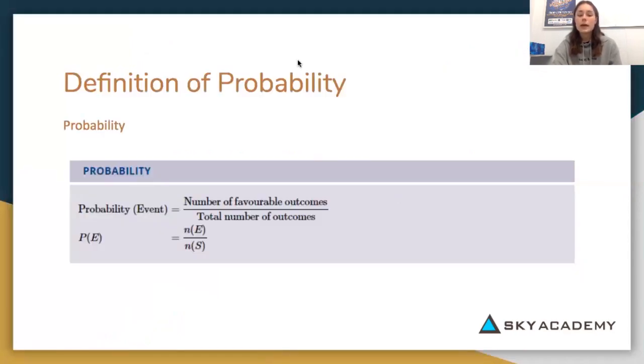We've talked about what probability is in the previous video and this video we have a formula to calculate the likelihood or the probability of an event occurring. This formula is in the blue box here and it's the probability of the event, P of the event, equals the number of favourable outcomes or what you're trying to find, over the total number of outcomes or the sample space.